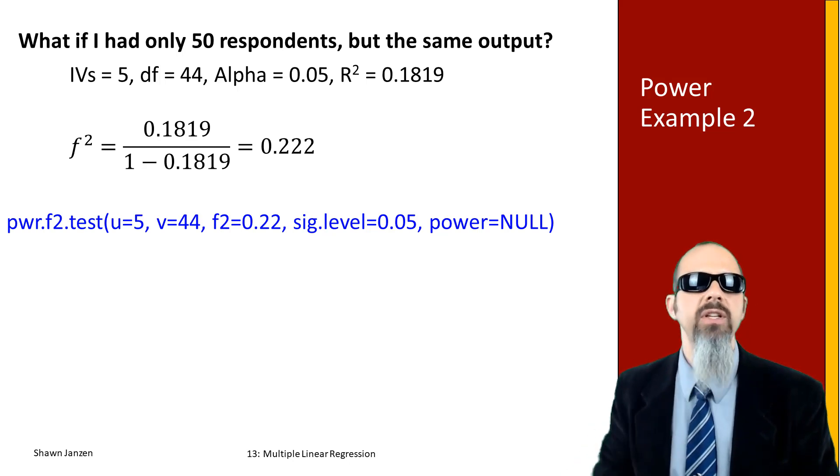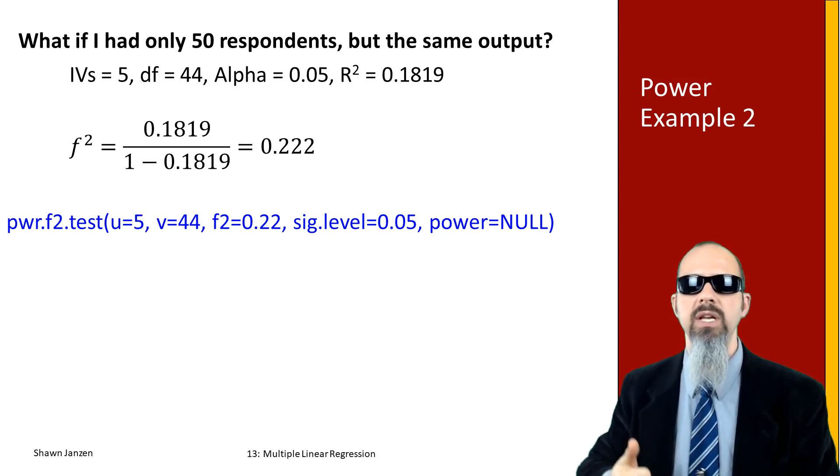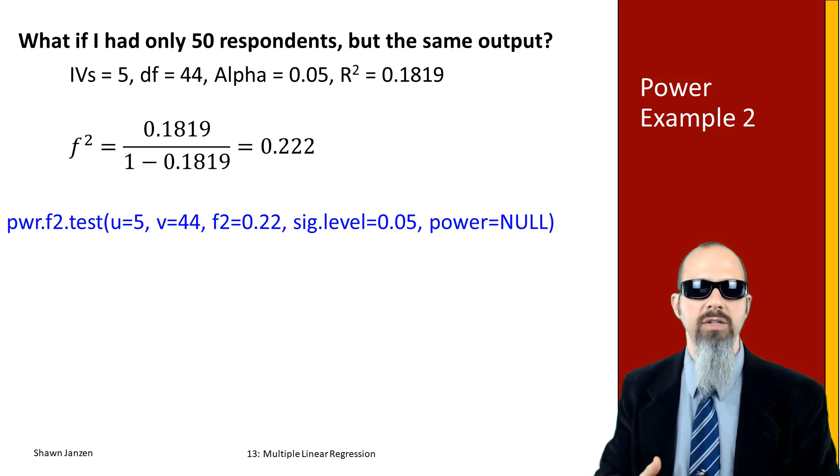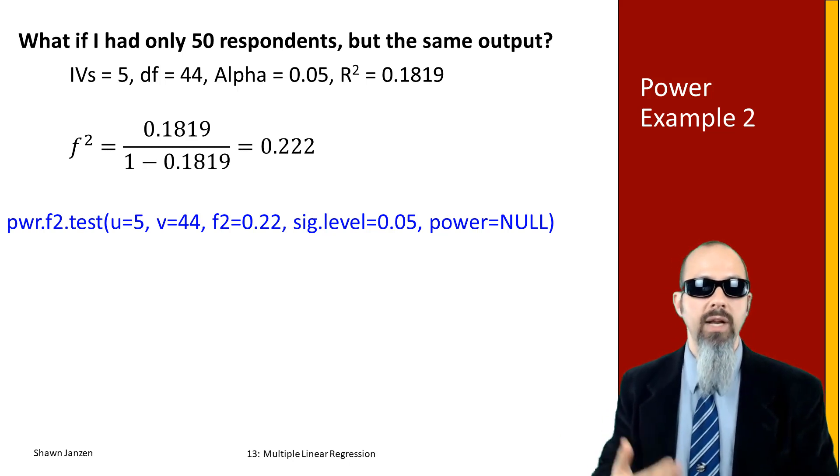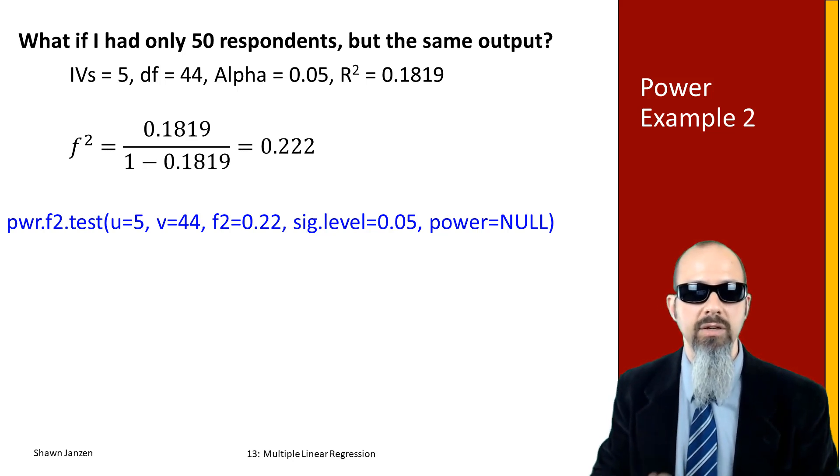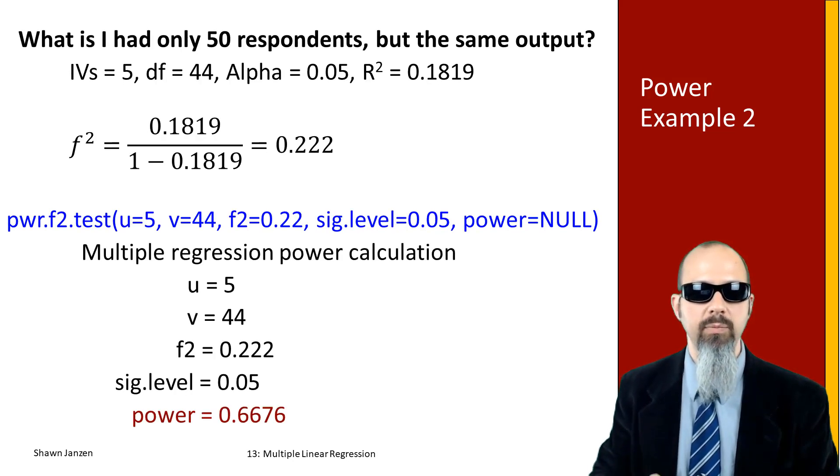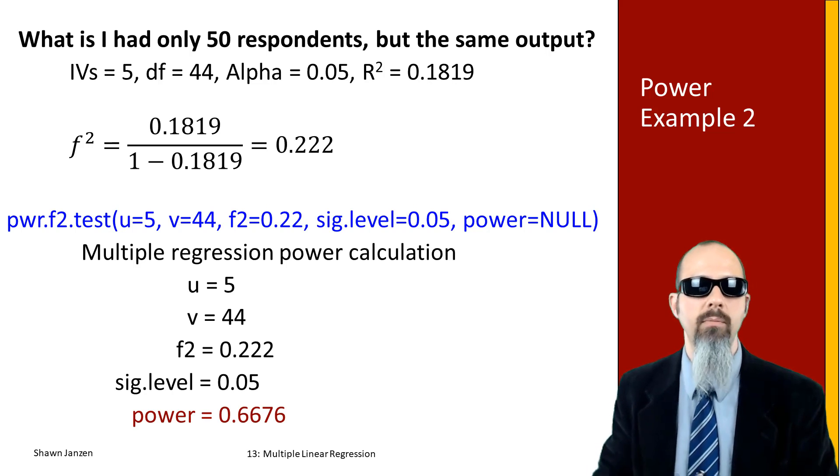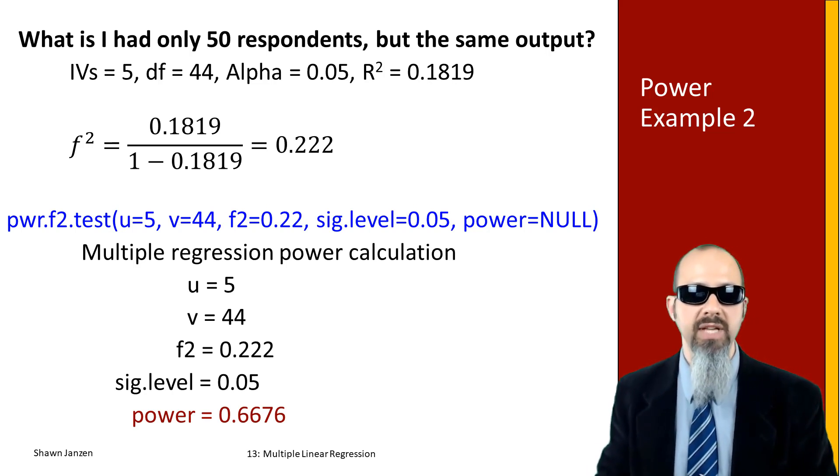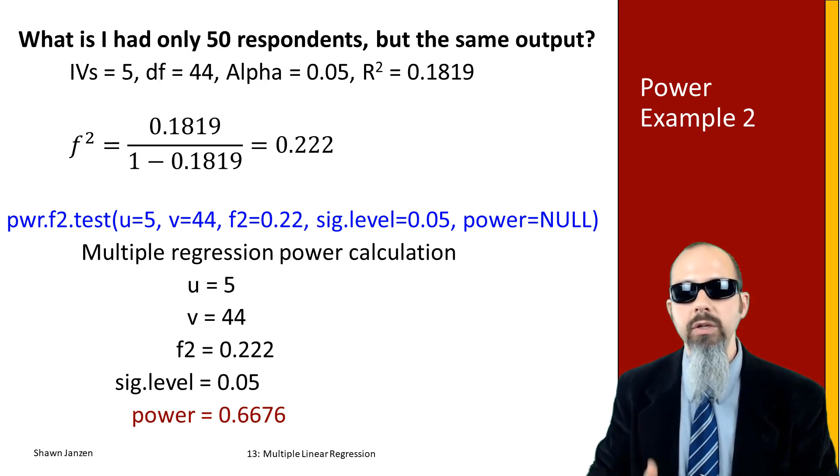What if I only had 50 respondents but the same other measures in my regression model - same number of independent variables, same alpha, same r²? When I plug all those things in, everything the same except adjusting my degrees of freedom from 94 to 44, I get a power of 0.6676. It has dropped dramatically - it dropped about 30% compared to when I had 94 degrees of freedom, essentially going from 100 to 50 on sample size.